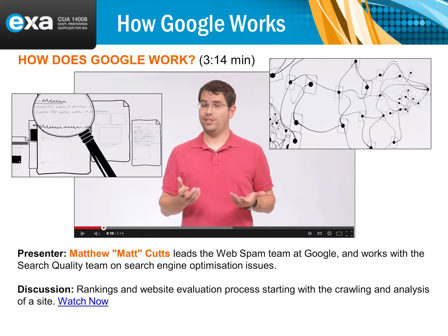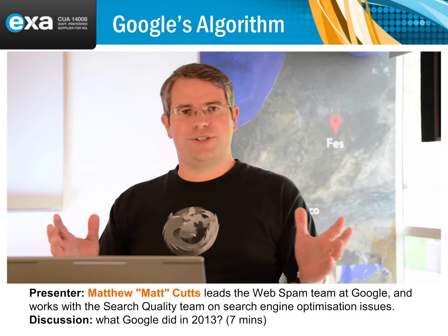I want to talk about how Google works, specifically algorithms. The same sort of algorithms apply with social media, so you need to consider algorithms when doing your social media to come up well in online search. Google's algorithms include Panda, Penguin, Hummingbird, and Pigeon, among many others. A lot of social media platforms base their algorithms on what Google does, because Google is one of the best search engines.